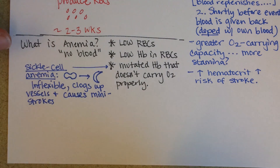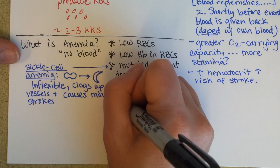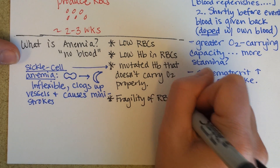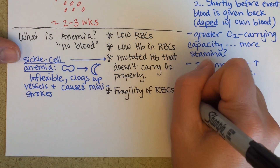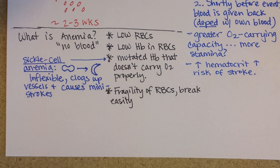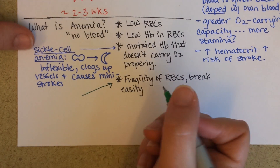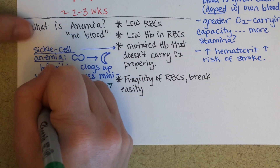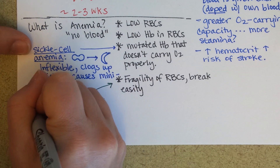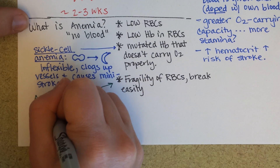Another cause might be that there are enough red blood cells, but the cells themselves are fragile. If red blood cells are too fragile, they break easily. This could be caused by some kinds of cancers — for example, aplastic anemia. 'A' means not, 'plastic' means to change shape, so these cells are fragile and breakable.